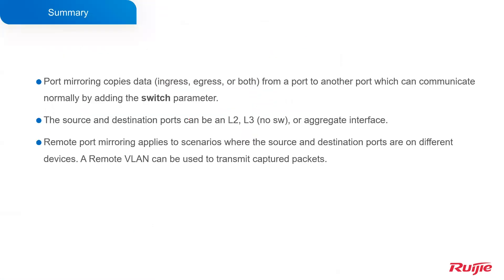In summary: port mirroring copies data from one port to another port, which can communicate normally by adding the switch parameter. The source and destination ports can be layer 2, layer 3, or aggregate interfaces. Remote port mirroring applies to scenarios where the source and destination ports are on different devices, and a remote VLAN is used to transmit captured packets. That's all for this part.